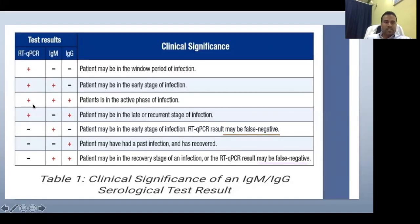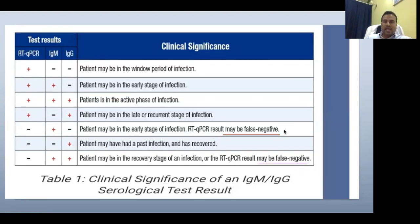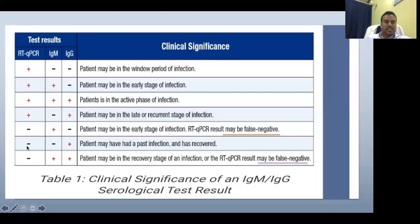If PCR is positive with IgM positive and IgG positive, the patient is in the active phase. By around day 21, IgM will be negative but PCR and IgG will be positive — the patient may be in the later or recurrent stage. If PCR is negative but IgM is present, the patient is still infected — PCR can go false negative and the test should be redone. If IgM is positive, the virus is definitely present. If both PCR and IgM are negative, with only IgG positive, this means past infection — the patient is completely cured and can be discharged.